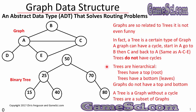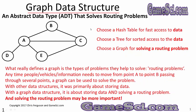Trees are hierarchical — they have a top, the root, and a bottom, the leaves. Graphs do not have a top and bottom. A tree is a graph without a cycle; trees are a subset of graphs. Choose a hash table for fast access to data, a tree for sorted access, and a graph for solving a routing problem.